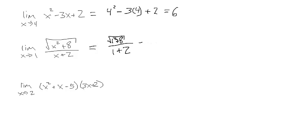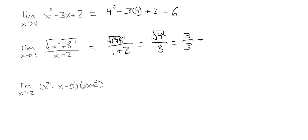That equals the square root of 9 — since 1 + 8 = 9 — divided by 3. The square root of 9 is 3, so we have 3 divided by 3, which equals 1.